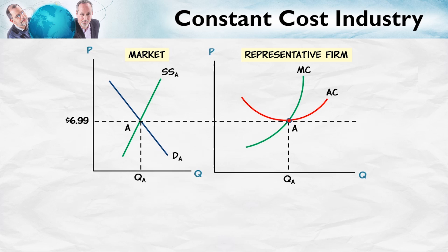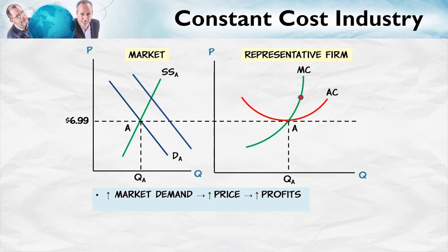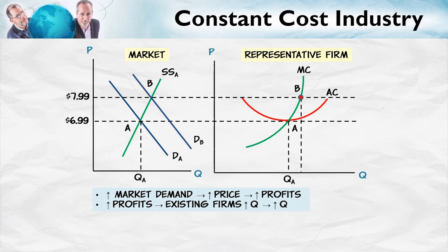Now let's look at what happens when we increase demand. Two things are going to happen. On the market side, the demand curve shifts out, pushing up the price to a new equilibrium. On the firm side, as the price goes up, the firm expands along its marginal cost curve. An increase in demand shifts the price up; we come to a new equilibrium at point B on the market side, and each firm expands along its marginal cost curve to a new equilibrium also at point B.